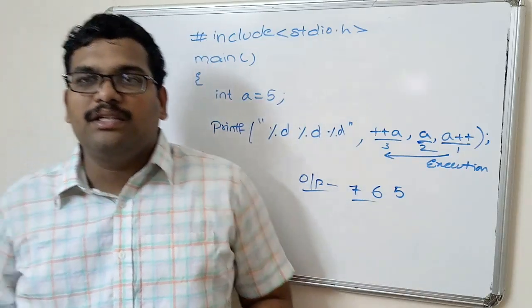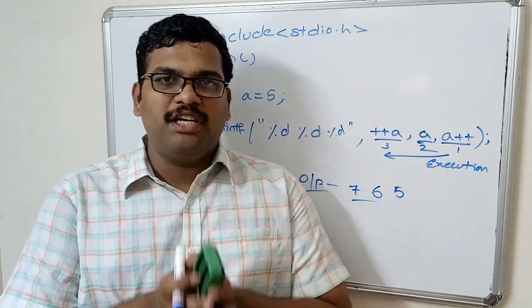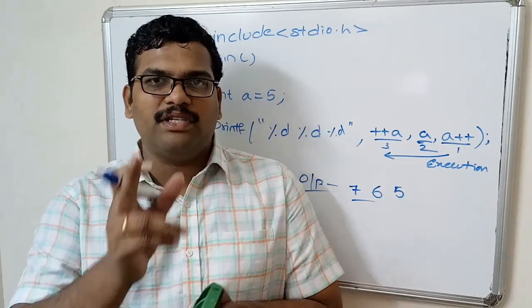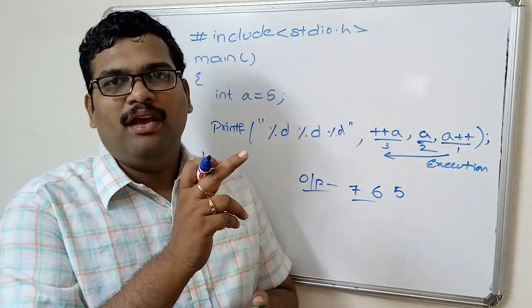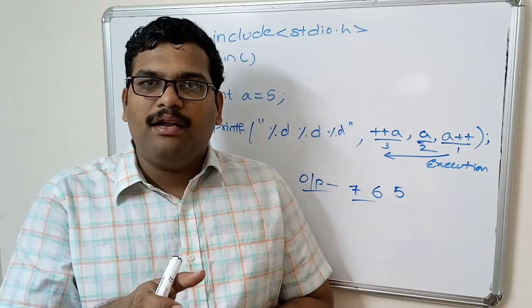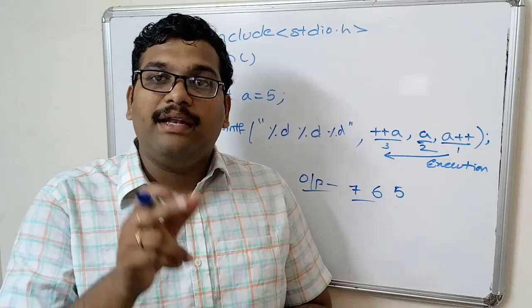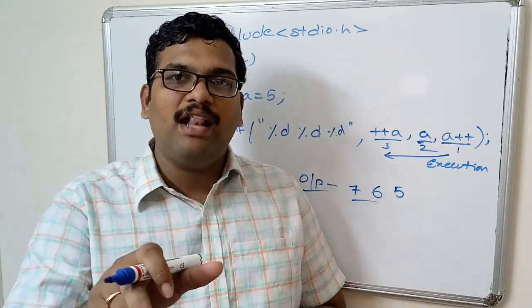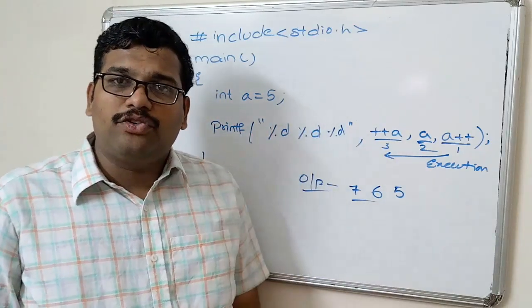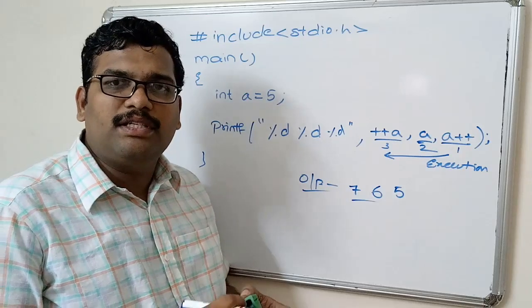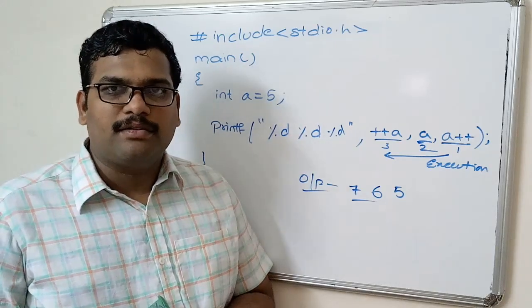So remember: for post-increment, the old value will be assigned to the variable and the statement will be executed, and immediately after, the a value will be incremented. For pre-increment or pre-decrement, first the increment or decrement will be done to the variable, and then the new value will be assigned. Let us stop this session, and in the next session we will have discussion on one more type of operators. Thank you.